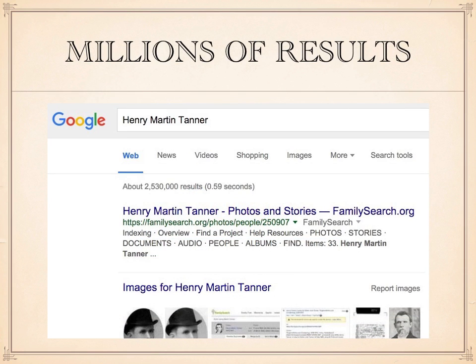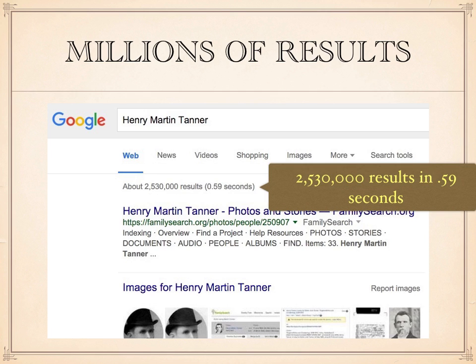When I hit enter, the Google search engine looks for any combination of the three words I've entered and gives priority to all three words together. As a result, I get a very large number of results — in this case, 2,530,000 results in .59 seconds. Obviously, I'm not going to look at all those 2 million plus results.